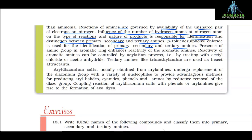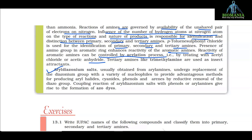The presence of an amino group in an aromatic ring enhances reactivity of aromatic amines. Reactivity of aromatic amines can be controlled by acetylation using acetyl chloride or acetic anhydride. Tertiary amines like trimethylamine are used as insect attractants. Aryl diazonium salts, usually obtained from aryl amines, undergo replacement of the diazonium group with a variety of nucleophiles to provide methods for producing aryl halides, cyanides, phenols and arenes. Coupling reactions of aryl diazonium salts with phenols or aryl amines give rise to the formation of azo dyes.